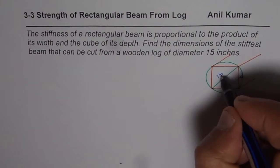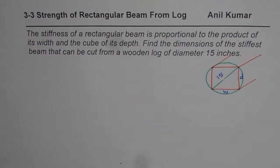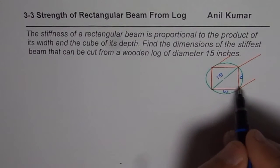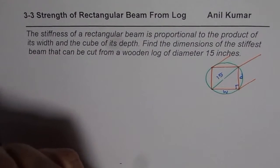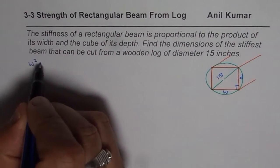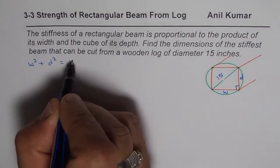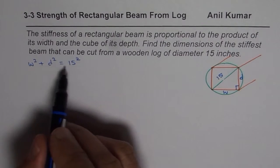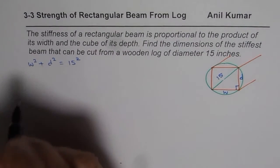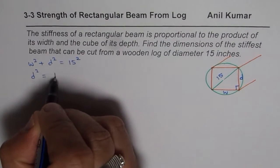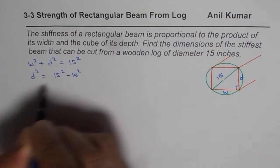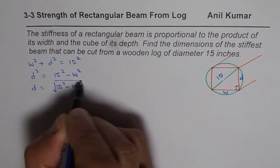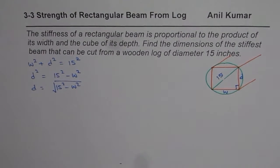Let width be W and depth be D. The diameter is given as 15. Width and depth can be linked with the help of the Pythagorean theorem since they form a right triangle, so W² + D² = 15². From here we can write depth in terms of width: D = √(15² − W²).